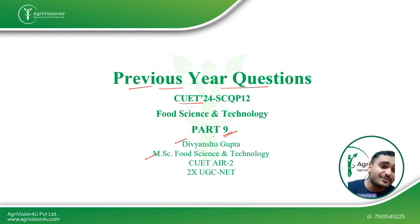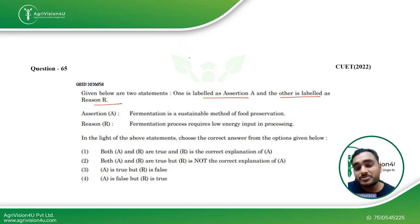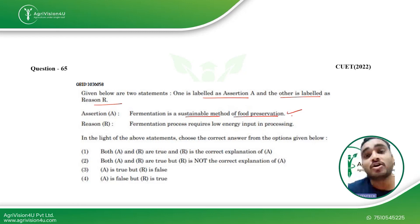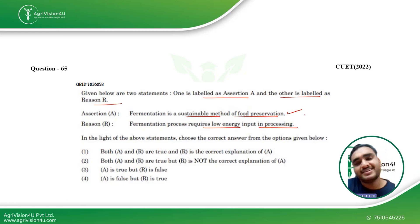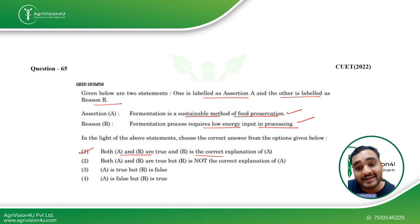Coming straight to the question for this video: we have assertion-reason based questions. Around 10 to 15 questions are from assertion-reason based, and many are match-the-following or true-false based. The first assertion is: fermentation is a sustainable method of food preservation — this is true because it utilizes byproducts released by processing industries. The reason is: fermentation requires low energy input — also true, as microbes do the work. Both assertion and reason are true, and reason is the correct explanation. This question was asked in CUET 2022.